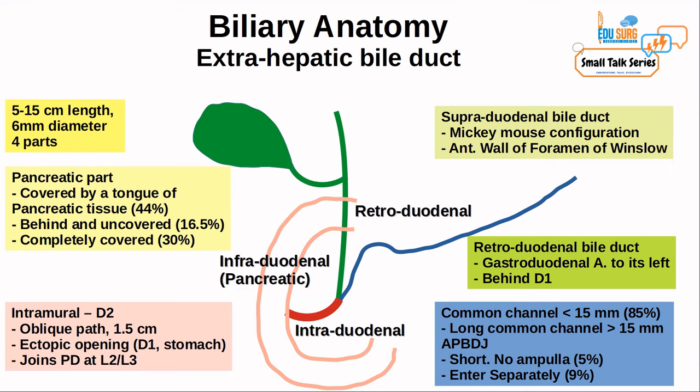A short common channel is seen without an ampulla in 5% of cases. The extrahepatic bile duct and the pancreatic duct can open separately without uniting, seen in 9% of cases. We have already seen that the supraduodenal bile duct forms the hepatoduodenal ligament in a Mickey Mouse configuration and is the anterior wall of the foramen of Winslow.